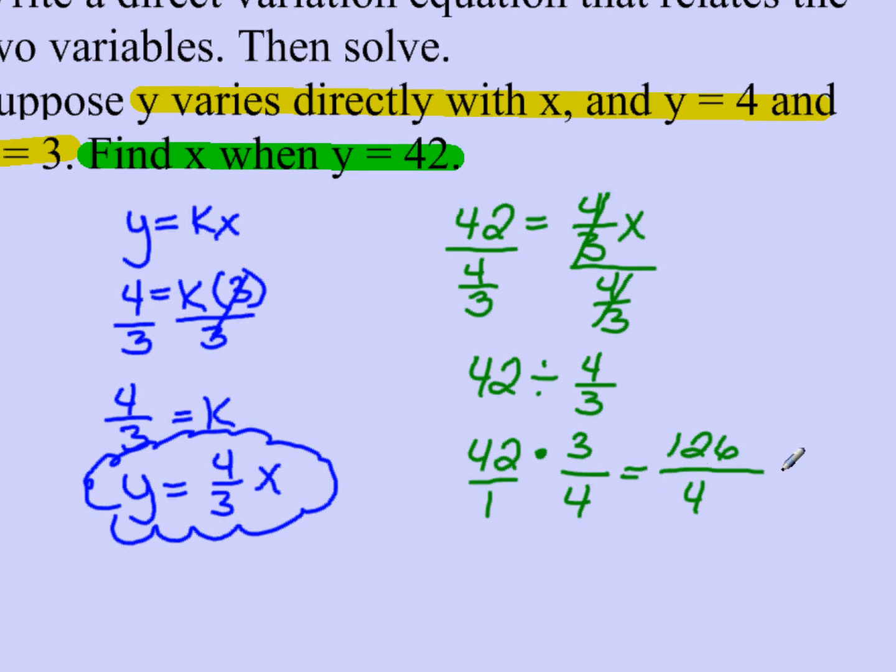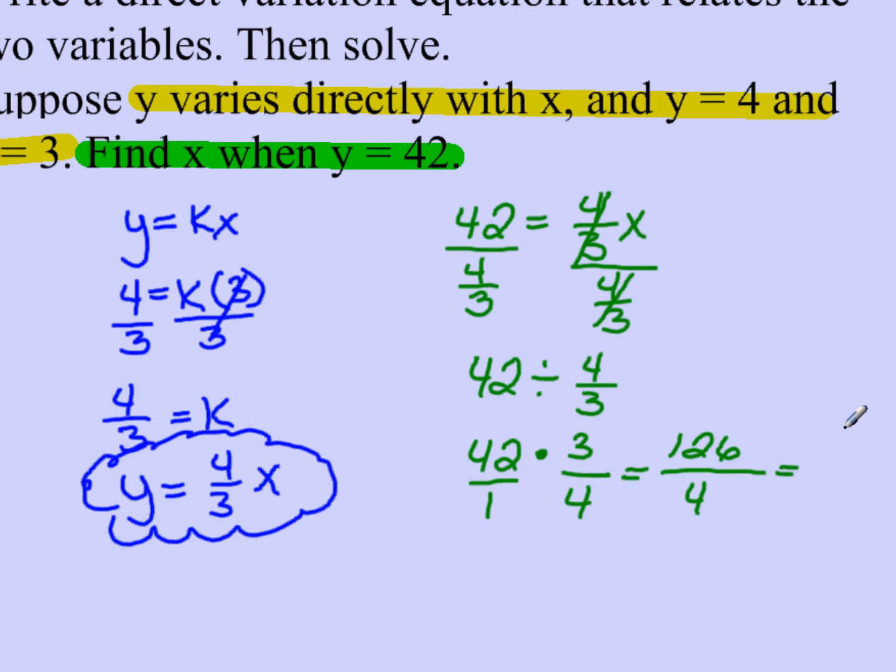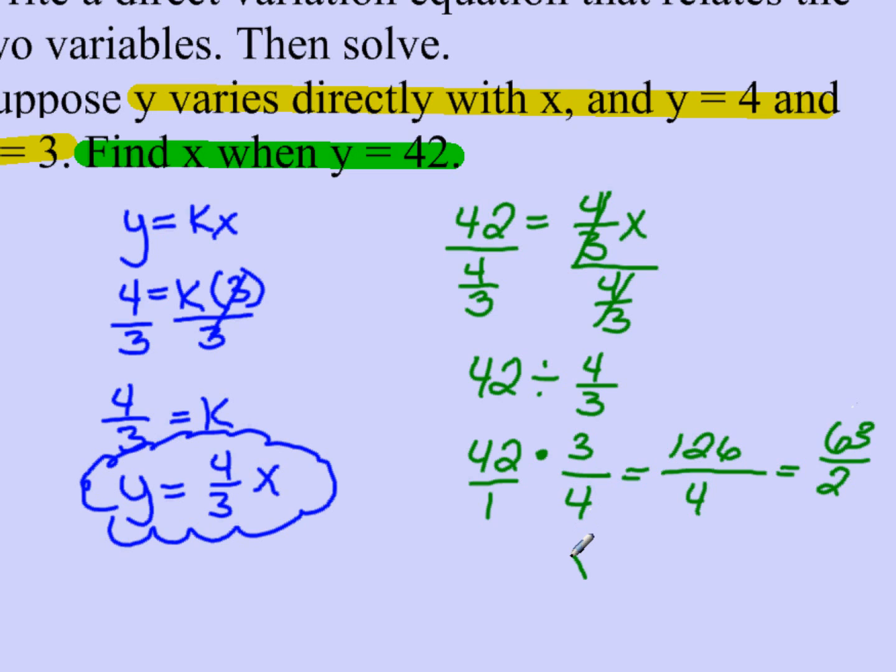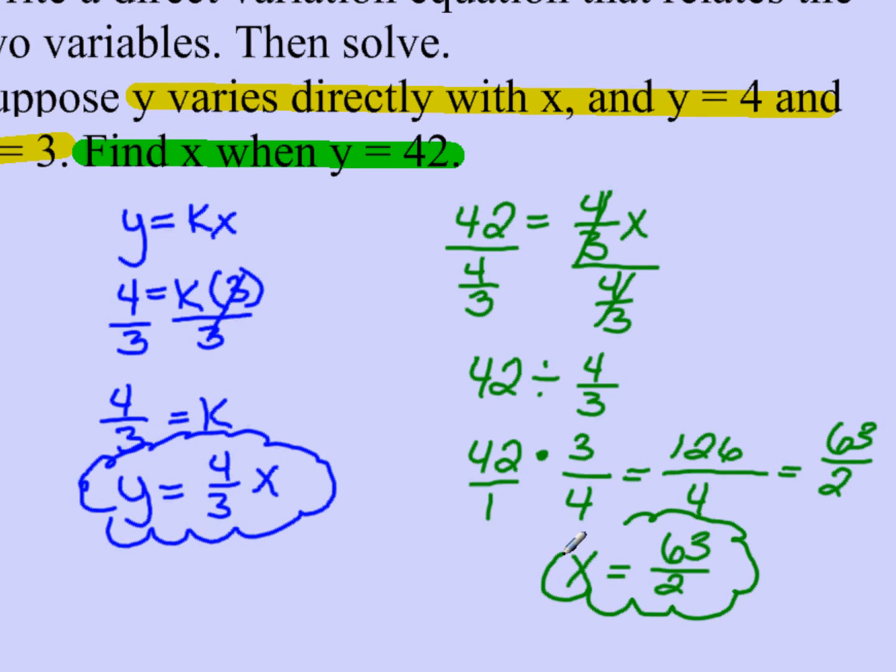I'm going to reduce this. 2 goes into 126 and 2 also goes into 4. So when I reduce it, I get 63 over 2. And therefore x equals 63 over 2. And that is how I solve direct variation equations when it's in this form.